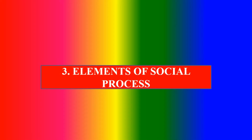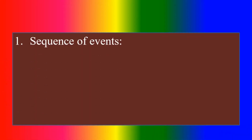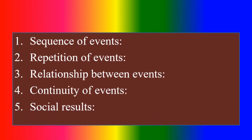Next section: Elements of Social Process. First element: sequence of events. Second element: repetition of events. Third: relationship between events. Fourth: continuity of events. Fifth: social results — every social process ends with a result. Example: cooperation ends with peace and harmony.